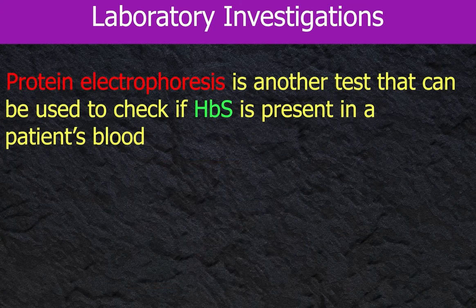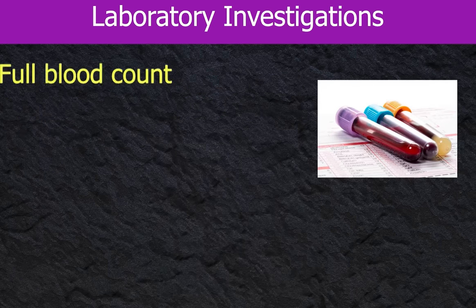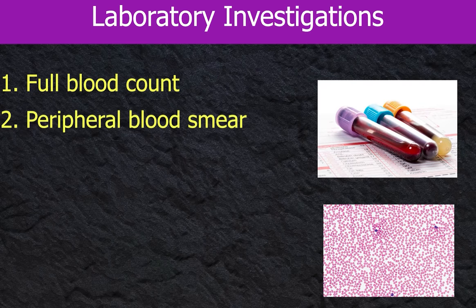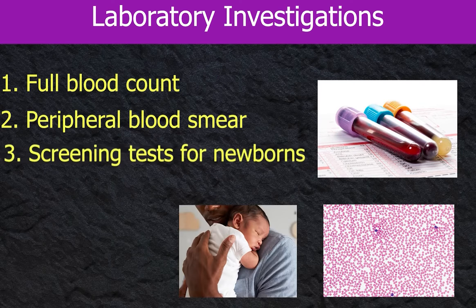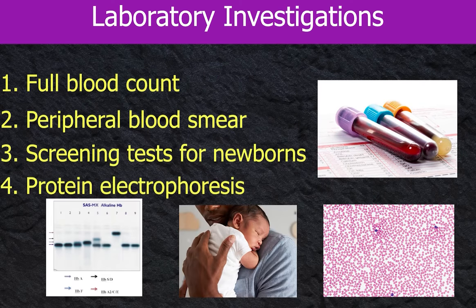Protein electrophoresis is another test that can be used to check if hemoglobin S is present in a patient's blood. Key investigations include full blood count, peripheral blood smear, screening tests for newborns, and protein electrophoresis.